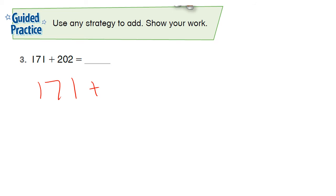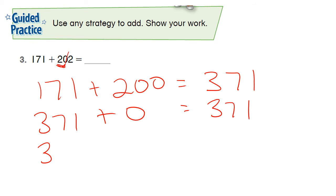So 171 plus 200, because that's in the hundreds place, equals 371. 371 plus 0, there's nothing in the tens place, is 371 again. You don't really need that line in there. I just put it there to make sure you realize we are doing hundreds and then tens and then ones. And then 371 plus 2 is equal to 373. So 171 plus 202 is equal to 373.